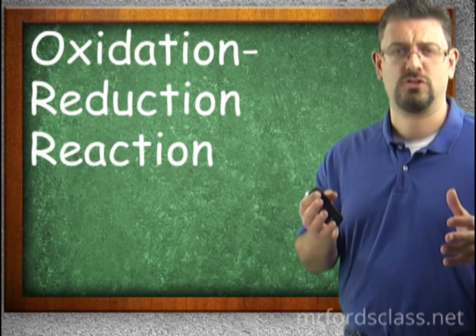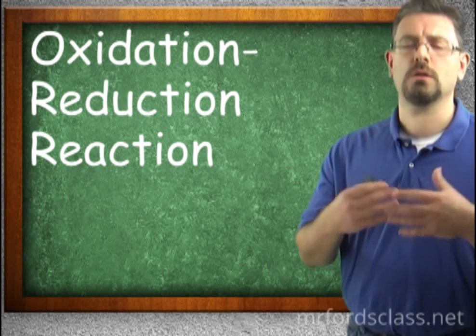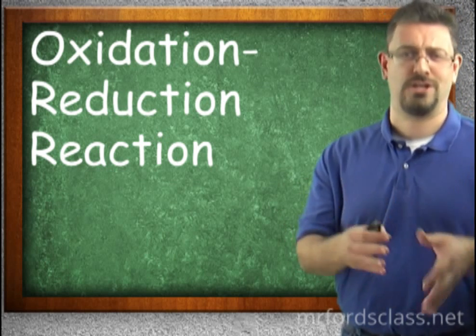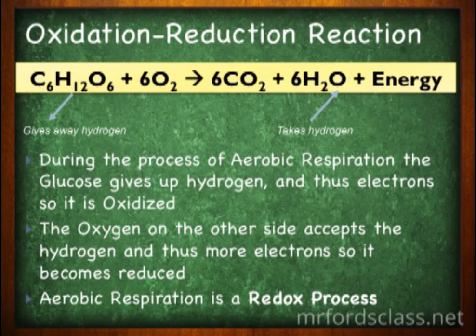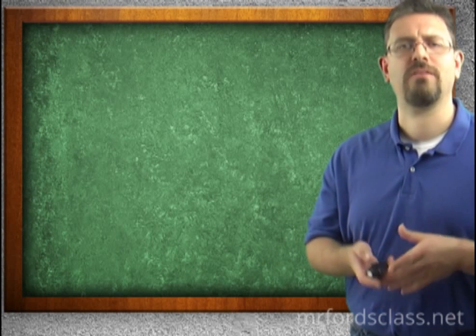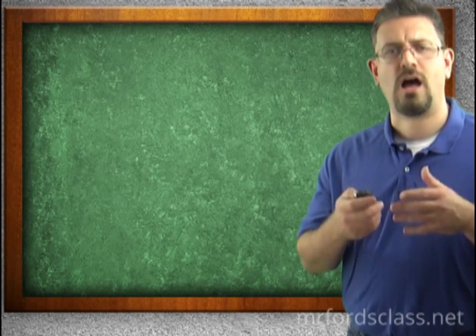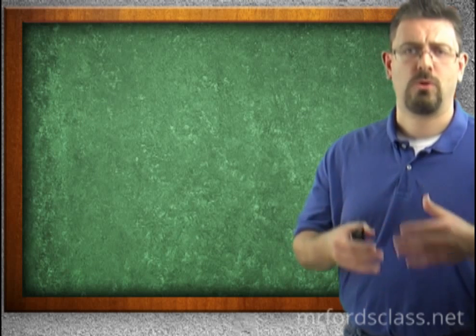So what does this have to do with cell metabolism? Well, glad you asked that question. During the process of aerobic respiration, the glucose is going to give up a hydrogen, an electron, so it's oxidized. Oxygen on the other side accepts the hydrogen and thus more electrons, it becomes reduced. So aerobic respiration is an example of a redox process, an oxidation-reduction process.